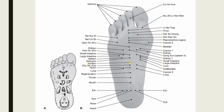The anmian point: in acupressure and acupuncture, anmian are traditional points for treating insomnia. Some practitioners also use these points to reduce anxiety, vertigo, and headaches. On the foot, the anmian point is located 0.6 unit distal to the heart point, or 5.3 units from the heel. Indications include psychosthenia, schizophrenia, insomnia, hysteria, and neurasthenia.